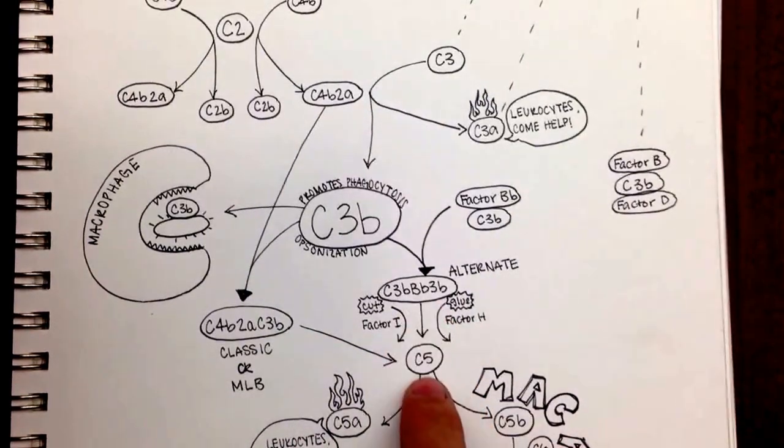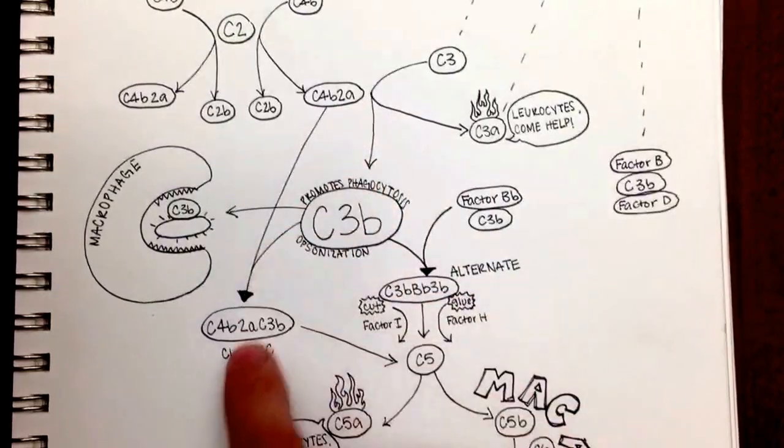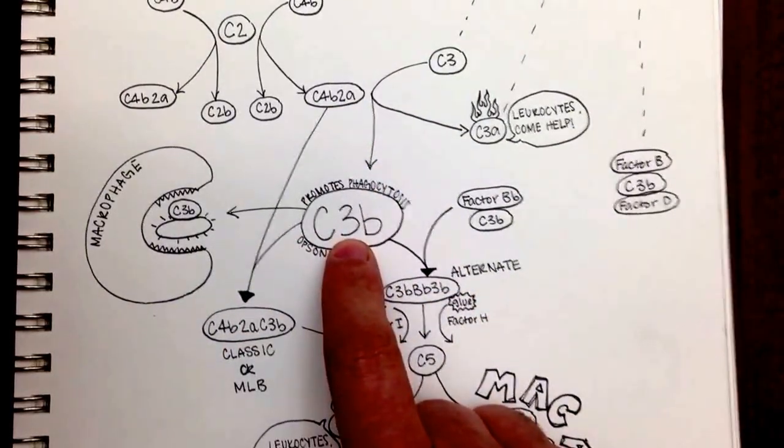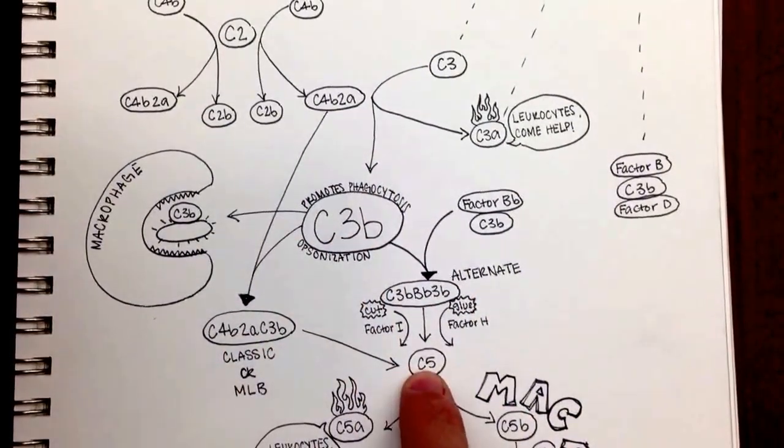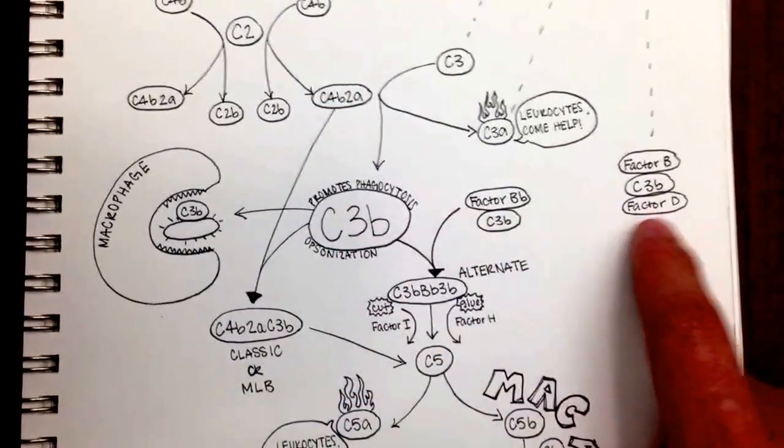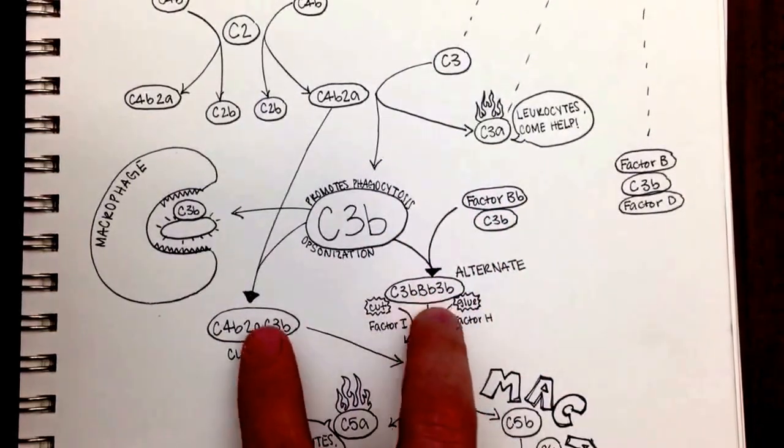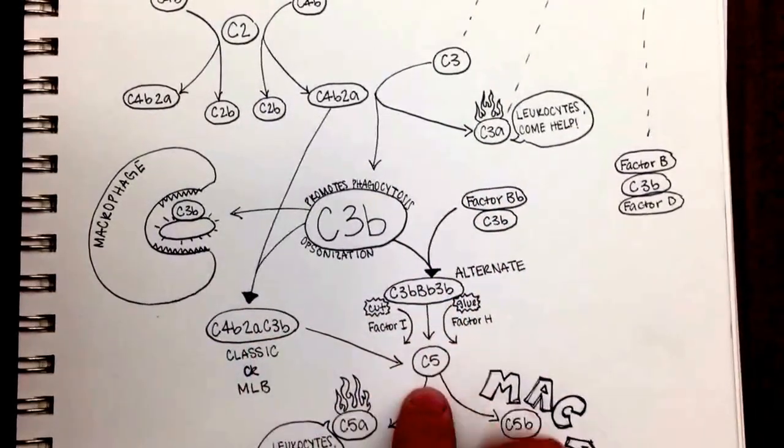An alternate pathway to cut C5 is to take this C4b2a that we had earlier, and it joins with C3b. And that will cut C5. So we can either have this piece, C4b2a joined with the C3b, or we can have this piece that came over here joined with C3b. And both of these pathways will allow us to cut a C5.